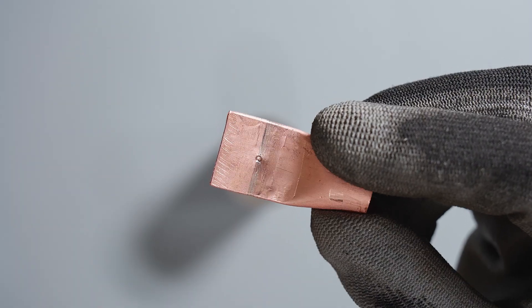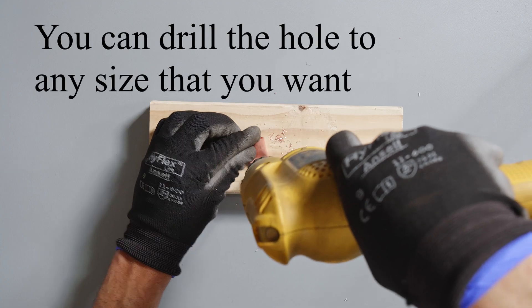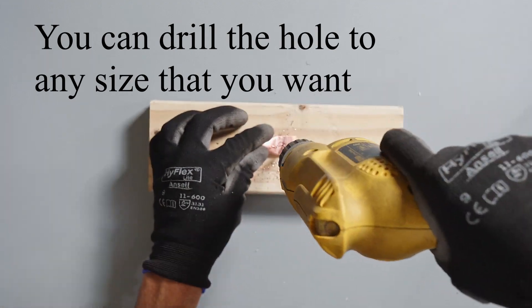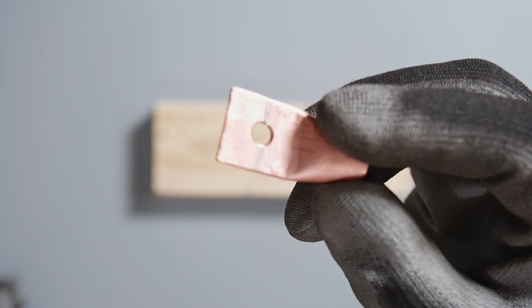As you can see there, there's the dimple. Make sure it's in the center - that's the most important thing. You can drill out the hole to any size, so this is going to be totally up to you depending on your application. After that, go ahead and clean that hole up.